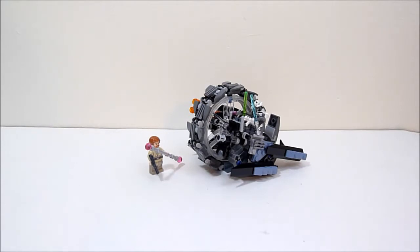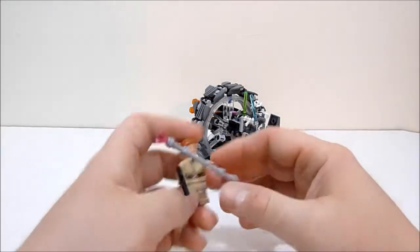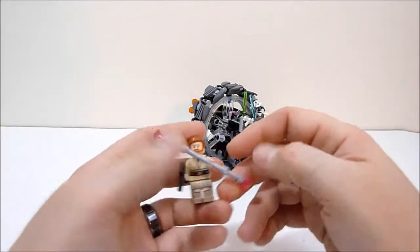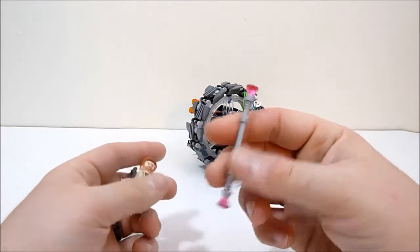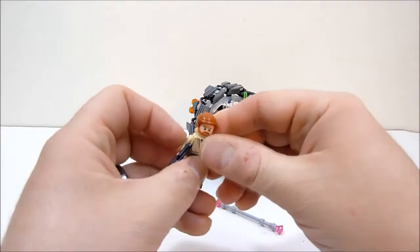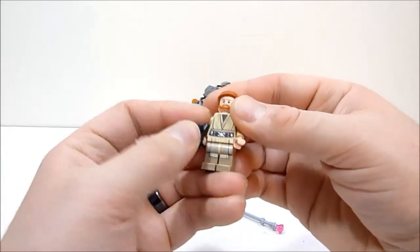All right, guys. So here we have General Grievous Wheel Bike. And yeah, we're going to check out the minifigs first, as we always do. And we'll start out here with Obi-Wan Kenobi. He's got a little electro shock stick. I don't know what it's called. Don't correct me. I don't care.